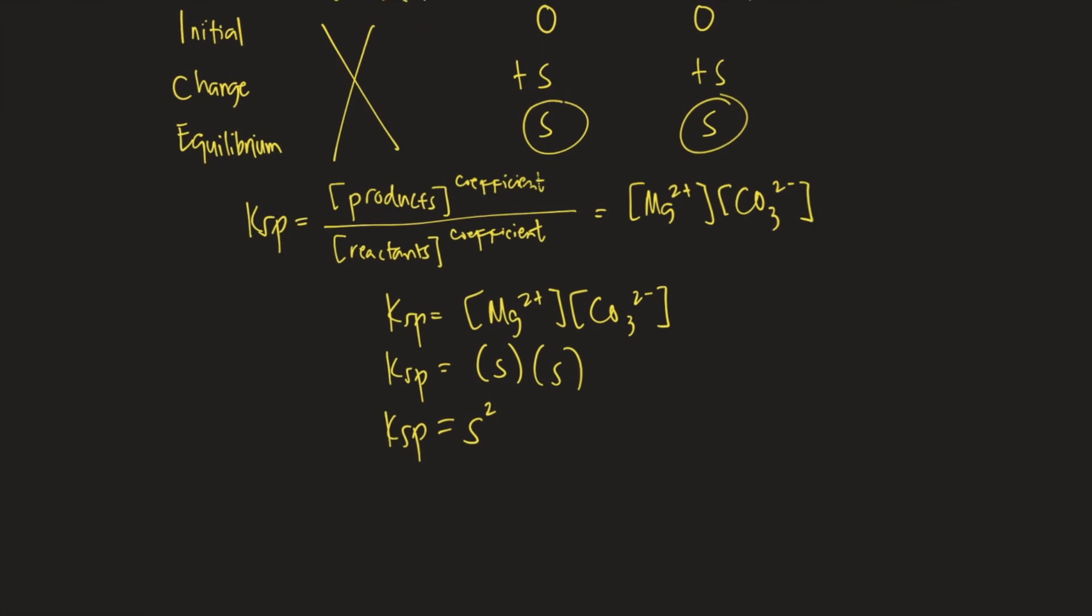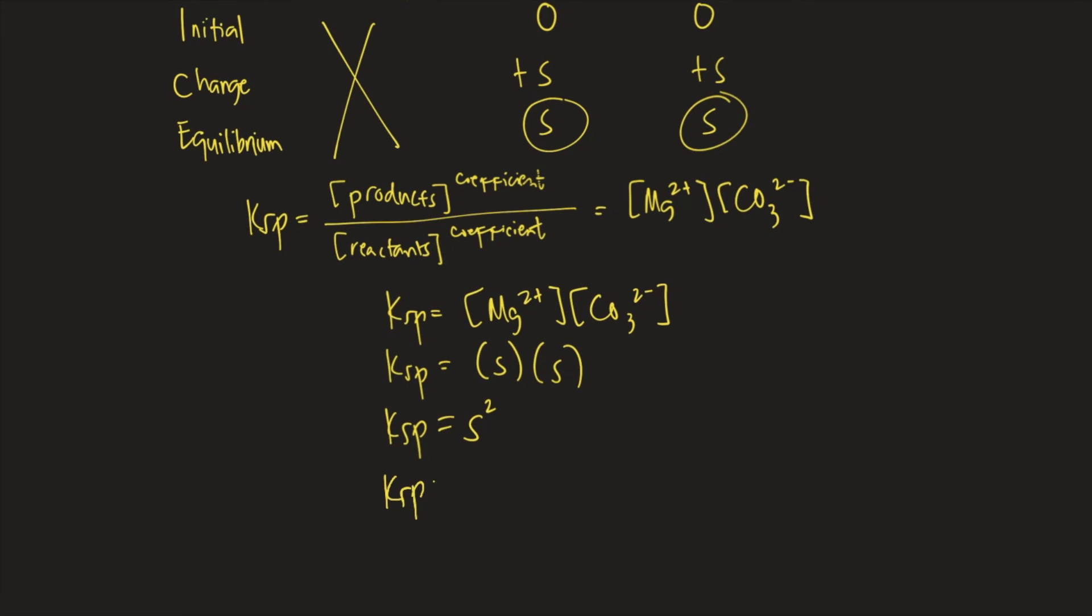So Ksp is equal to 1.87 times 10 raised to negative 4. Square that. Plug the numbers into your calculator. This is equal to about 3.50 times 10 raised to negative 8. Usually, Ksp is written without unit. So the answer to this question is 3.50 times 10 raised to negative 8.